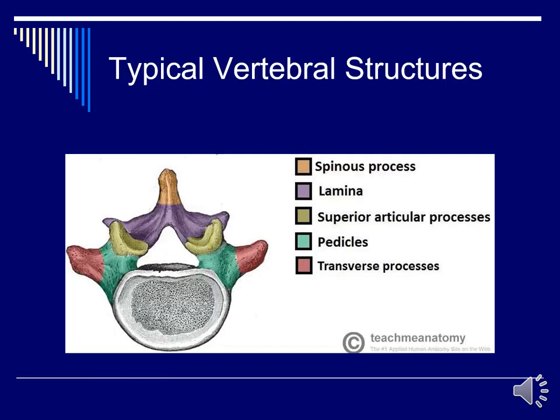Here is another image showing color coding of a typical vertebra with the body, the pedicles, the transverse process, the superior and inferior articular processes, the lamina, and the spinous process.